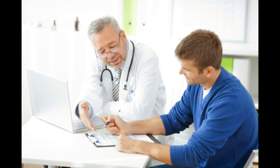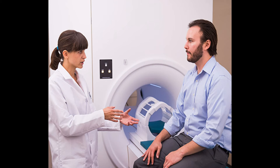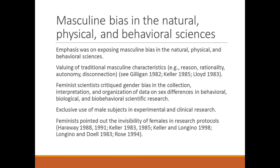Feminist science critiqued gender bias in the collection, interpretation, and organization of data on sex differences in behavioral, biological, and biobehavioral scientific research. An example is the exclusive use of male subjects in experimental and clinical research, but then generalizing those results to everyone — as if measuring what happens to men allows you to infer what happens to women. Feminists pointed out this invisibility of women in research protocols. Even if there are problems with female subjects, because you have to control for hormone cycles, you still can't generalize from the male body to the female body without using female subjects.